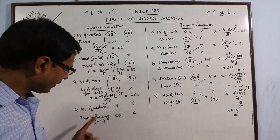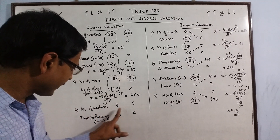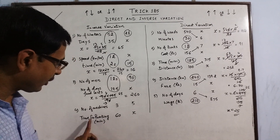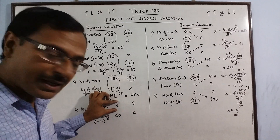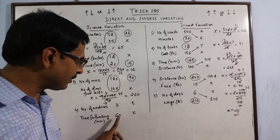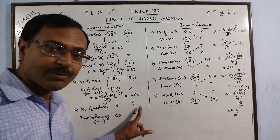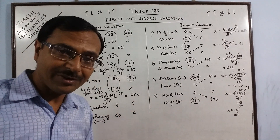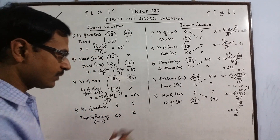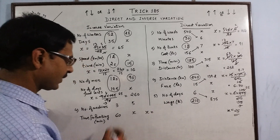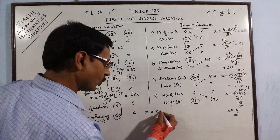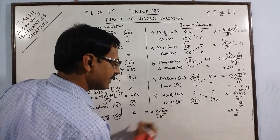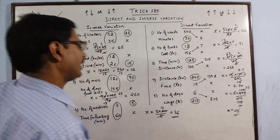If 3 machines working together take 60 minutes for painting, how much time will be taken by 5 machines? Here the number of machines is increasing, so the time taken will be less — this is inverse variation again. Multiply the two known values one below the other and divide by the third quantity, 5. So 3 into 60 divided by 5: 5 cancels exactly 12 times, giving 36 as the answer. So 5 machines will take 36 minutes.